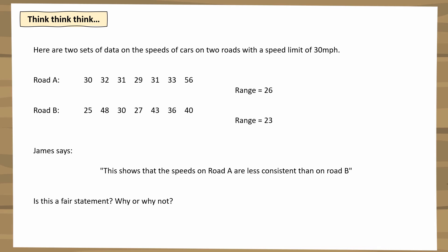If we look at the raw data on Road A, they're all pretty consistent — quite close together. If we ignore the 56, then 30, 32, 31, 29, 31, and 33 have only a range of four. All those cars were going quite similar speeds. But the 56 is quite an outlier — just one car going well over the speed limit — and that has affected and skewed our range.